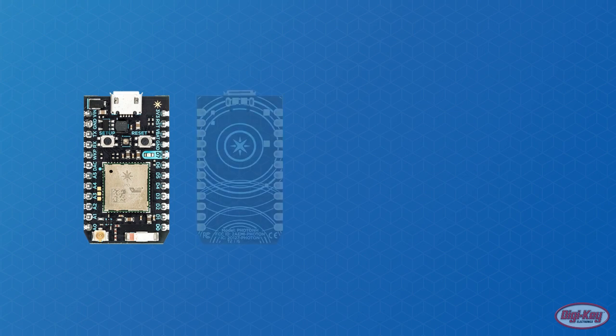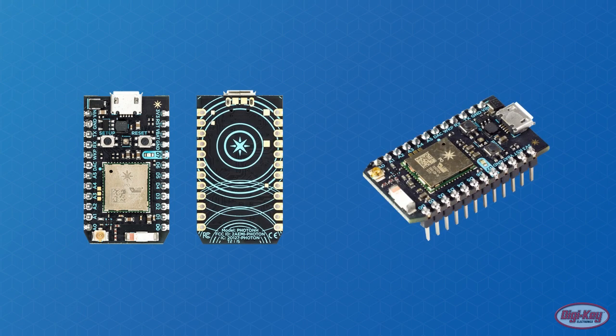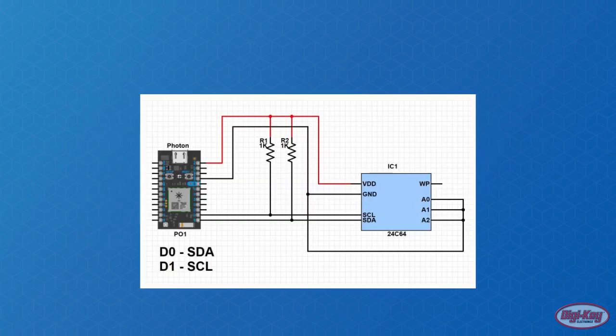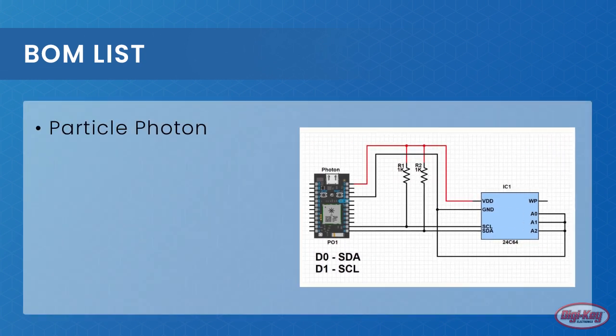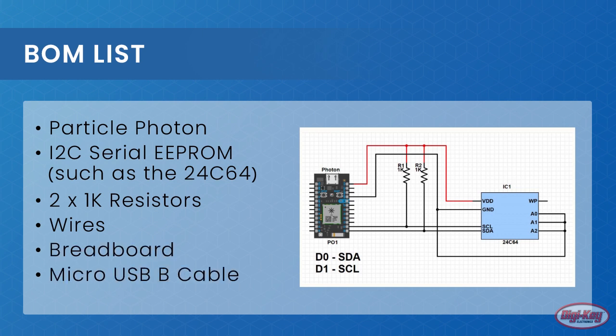When building projects with a Particle Photon, you will eventually need to use hardware more advanced than tactile switches or LEDs. In this tutorial, we will learn how to use the Wire library to interface with I2C devices, which allow you to interface with many different modules including sensors and serial memory chips. For this project, you will need a Particle Photon board, an I2C serial EEPROM such as the 24C64, two 1K resistors, wires, a breadboard, and a micro USB-B cable.